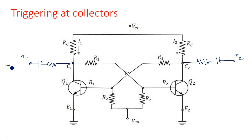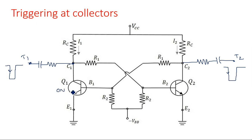One important thing is we should give a negative going pulse as the triggering pulse — positive is not used. Assume a condition where Q1 is in on state and Q2 is in off state. As Q1 is in on state, it is operated in the high saturation region, and Q2 is operated in the high cutoff region.